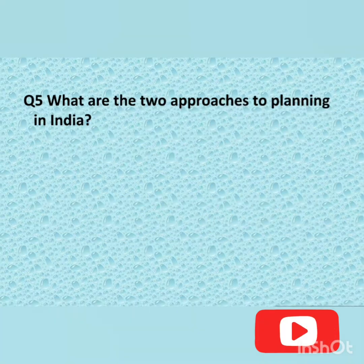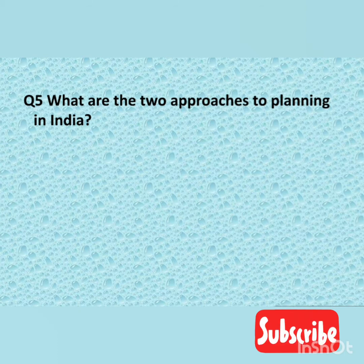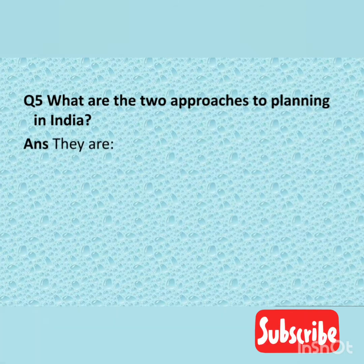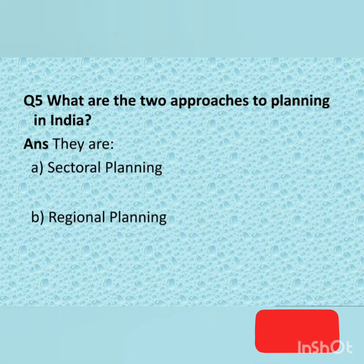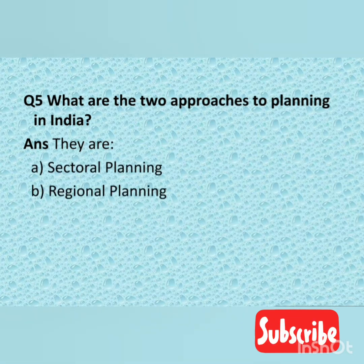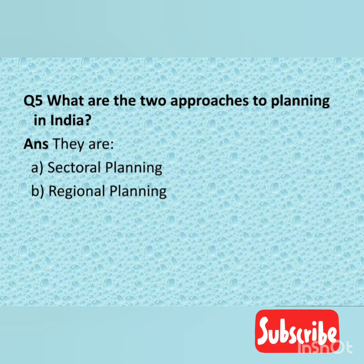Question number five: What are the two approaches to planning in India? The answer is sectoral planning and regional planning. Sectoral planning aims to develop four sectors: primary, secondary, tertiary, and quaternary. Regional planning aims to develop all areas between regions and provide facilities to them.